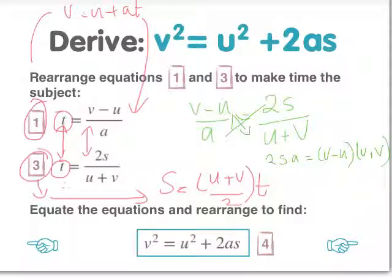If we multiply out the brackets then, you end up with 2sa equals v squared minus u squared.